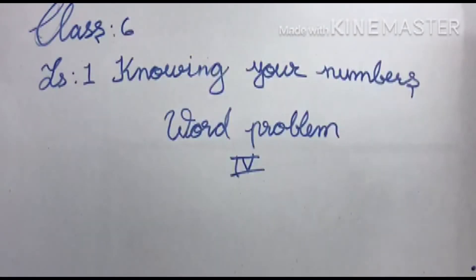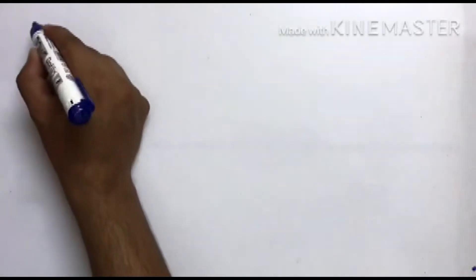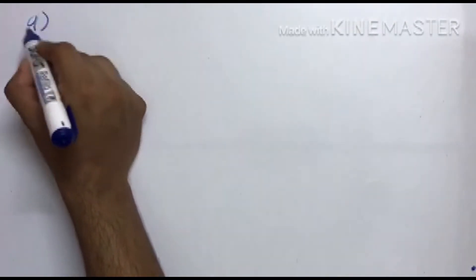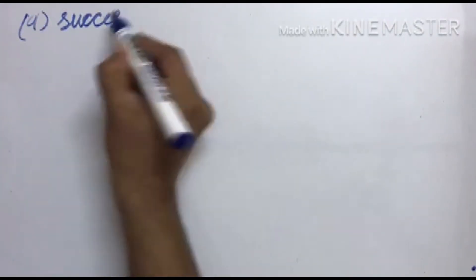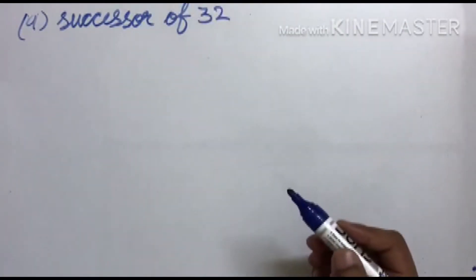Good morning students. Today we will continue our word problems. The next question is: determine the sum of the four numbers as given below. The first number is the successor of thirty-two. So the successor of 32 is 33.